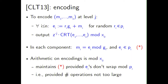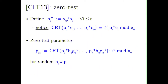To do arithmetic on encodings, you simply add and multiply mod X_0 — X_0 is public. This preserves the plaintext structure as long as the E_i values do not wrap modulo the large primes P_i, i.e., as long as the number of operations is not too large.